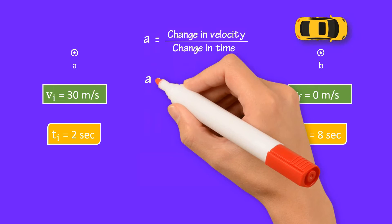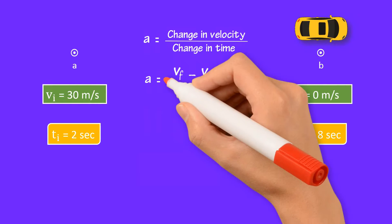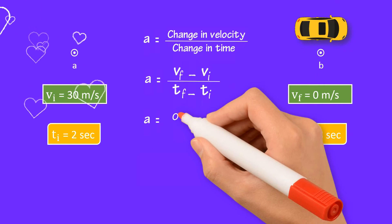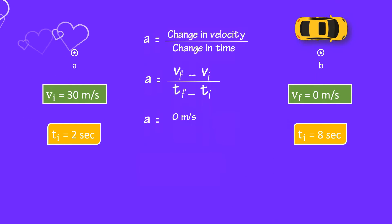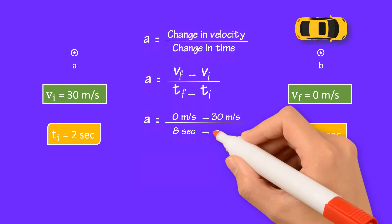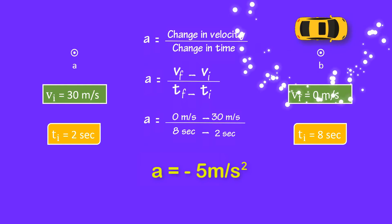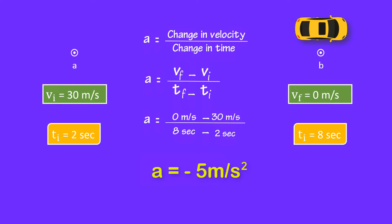Hence, acceleration equals vf minus vi divided by tf minus ti. Here vf = 0 m/s, vi = 30 m/s, tf = 8 s, and ti = 2 s. As a result, acceleration equals minus 5 meters per second squared. The minus sign tells us that the velocity of the car decreases by 5 meters per second every second from point A to point B.